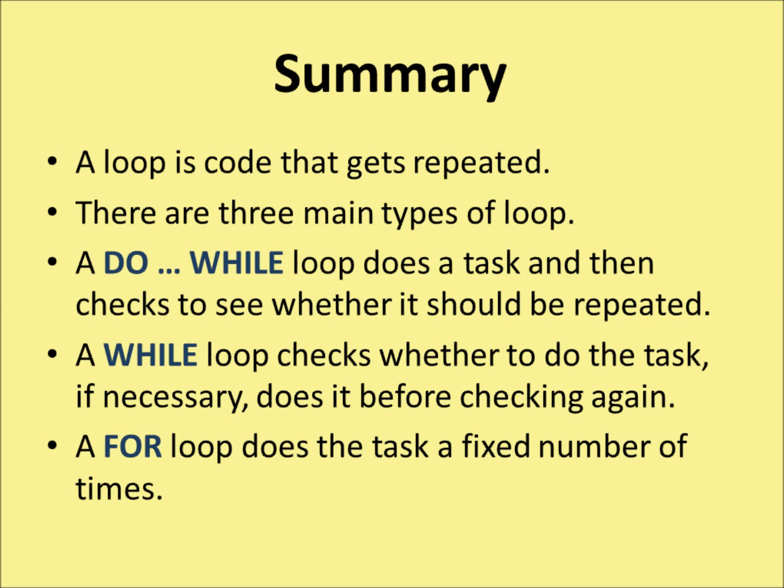Here's a summary. A loop is code that gets repeated. There are three main types of loop: a do-while loop that does a task and then checks whether it should be repeated again; a while loop which checks whether to do the task before entering it and repeats as necessary; and finally a for loop, which does the task a fixed number of times — you specify how often you want the logic repeated.